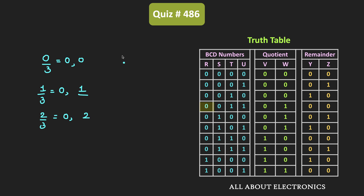Then in the fourth case, when 3 is divided by 3, the quotient is 1 and the remainder is equal to 0. That means the quotient is 01, while the remainder is equal to 00. Likewise, for the remaining cases, the quotient and remainder have been calculated. In this way, we got the outputs VW and YZ.